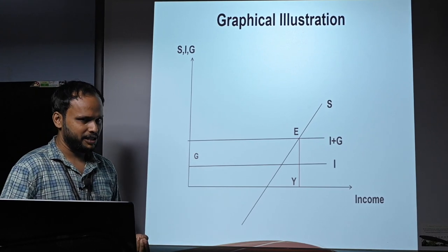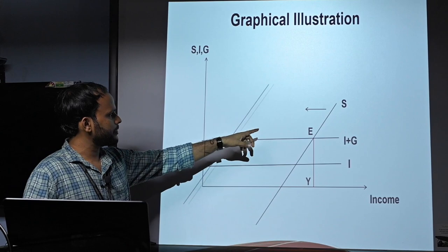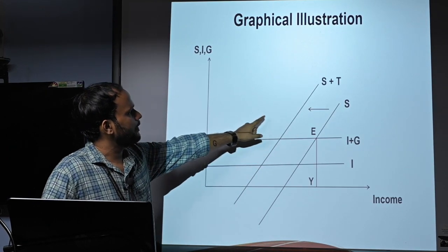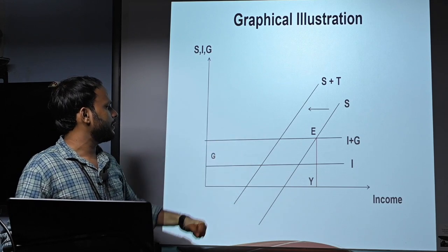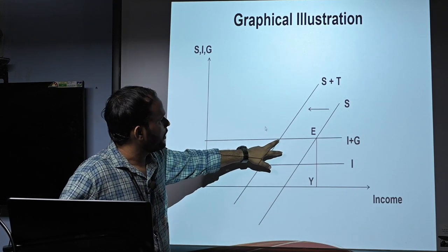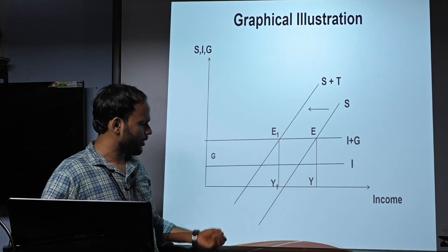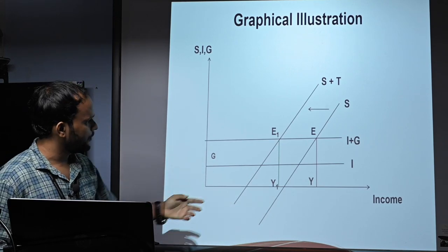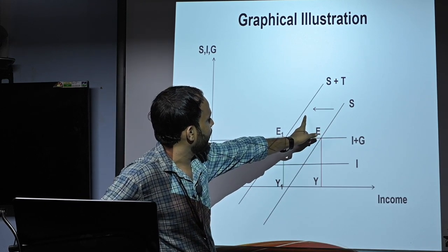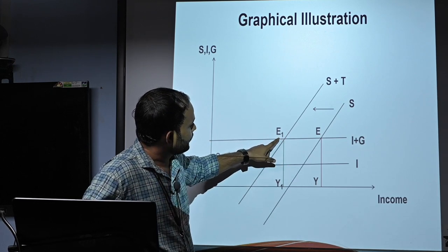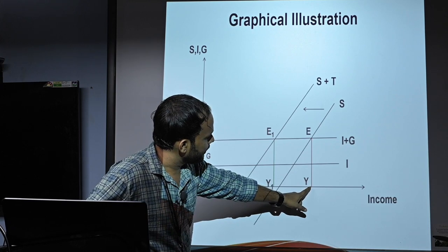After taxation, the new saving curve (S + T) intersects the investment curve I + G at new equilibrium point E1. The new equilibrium level of national income is OY1, which is less than the national income OY before the imposition of taxation. So when government imposes taxes, the saving curve shifts leftward, a new equilibrium is established at a lower level of national income.